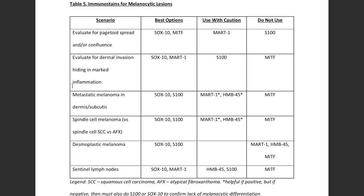I recommend against MITF for looking at any dermal melanocytic proliferation, for metastatic melanoma, or for sentinel lymph nodes — it stains so many things that are not melanoma. I've seen people try to make a diagnosis of metastatic melanoma just because MITF was positive and every other melanocytic marker was negative, and in my opinion that's dangerous. For metastatic melanoma, Sox10 and S100 are my go-to stains, same as for spindle cell melanomas in sun-damaged skin. They're very sensitive — not totally specific, so you have to be cautious — but the best markers for those scenarios.